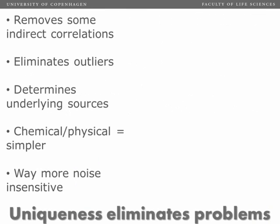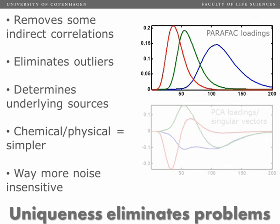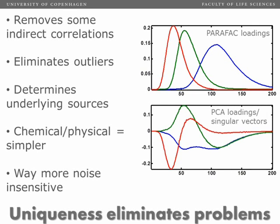This is helpful because it helps us remove indirect correlations. We separate the contributions from different chemical analytes, and this also eliminates outliers.